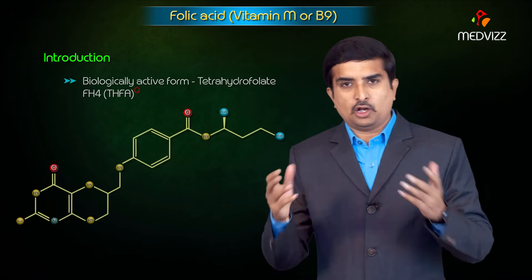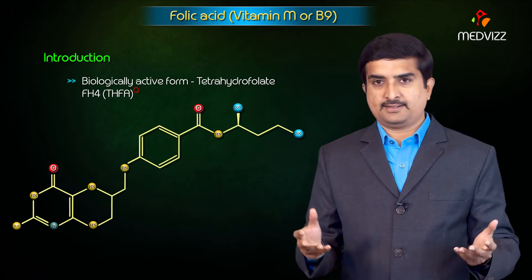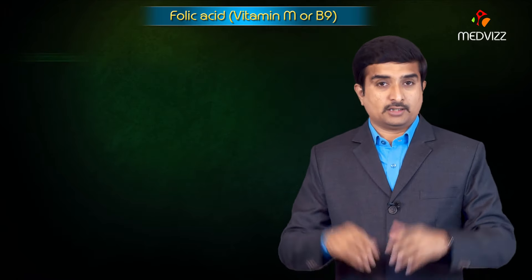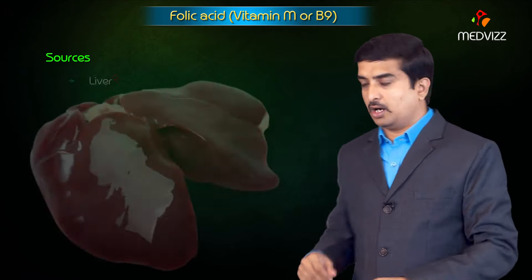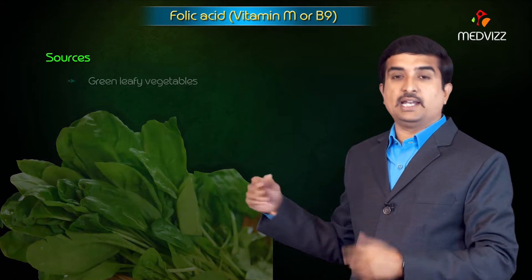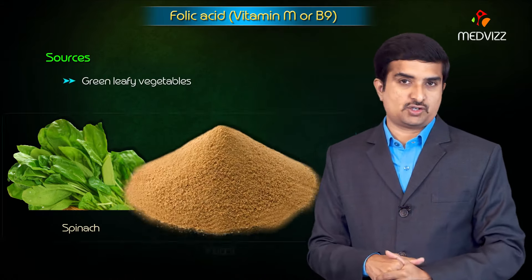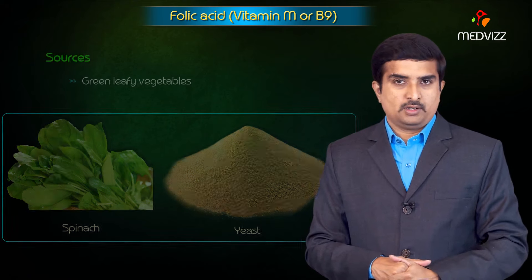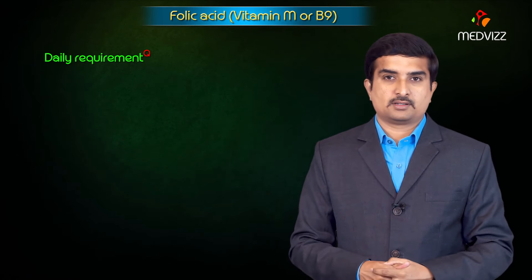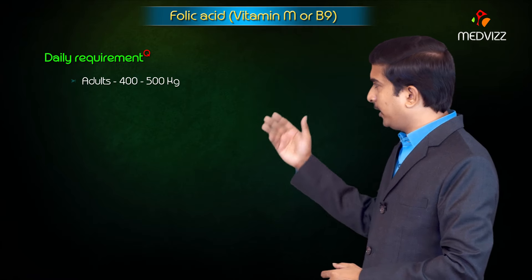The biologically active form of folic acid is tetrahydrofolate. Rich sources include liver, green leafy vegetables such as spinach, as well as yeast.